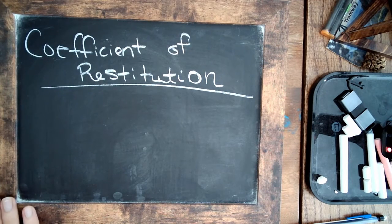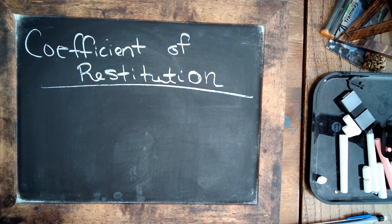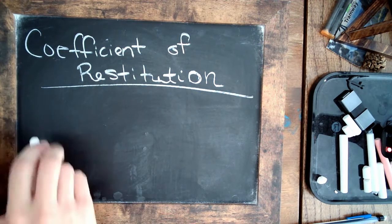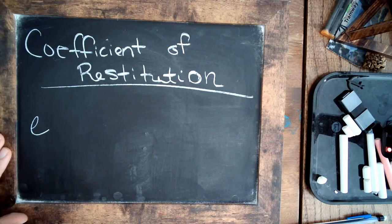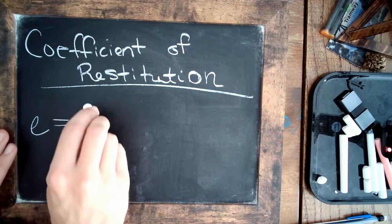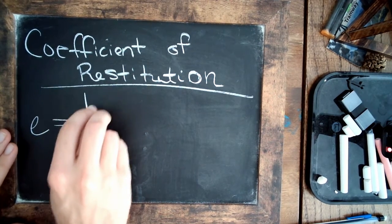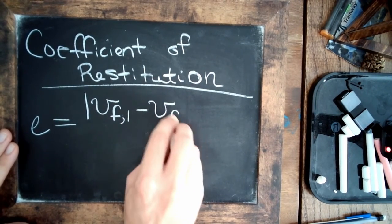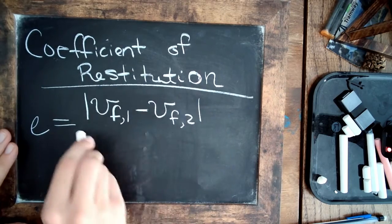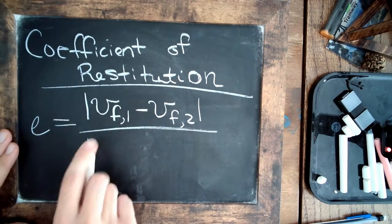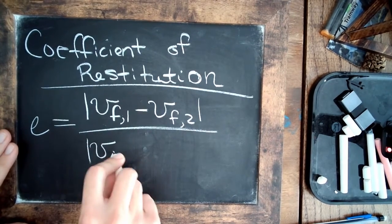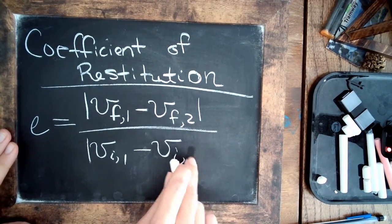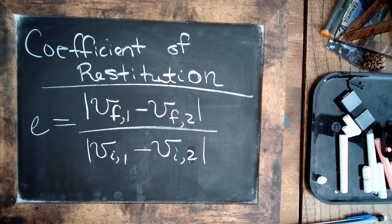Another way to quantify this deformation during a collision is to calculate this thing called the coefficient of restitution, which we'll call lowercase e, and it's simply equal to the difference in the final velocities of two objects, that we'll call one and two, divided by the difference in the initial velocities between objects one and two, and the absolute value of those.